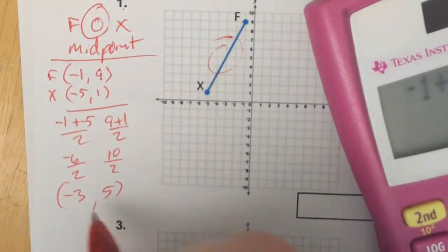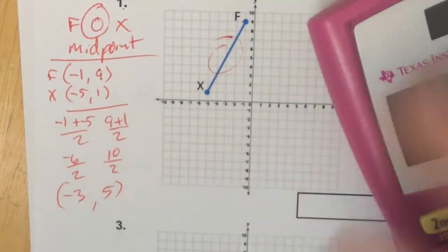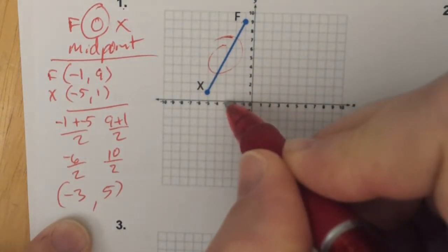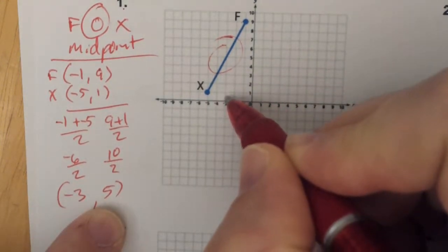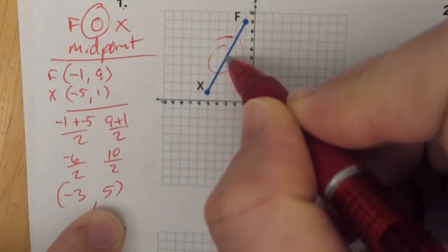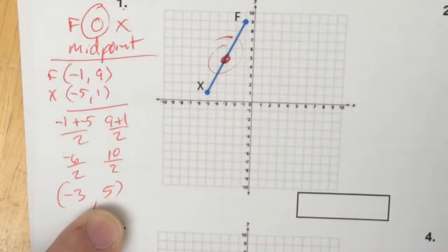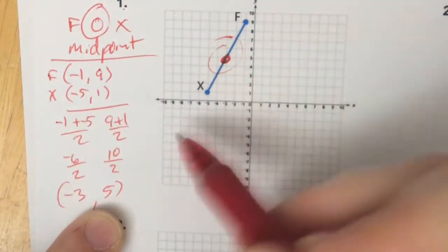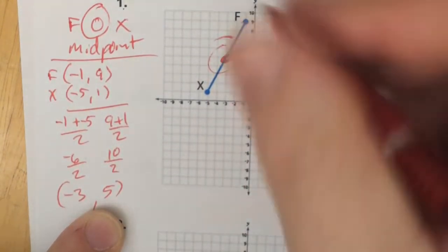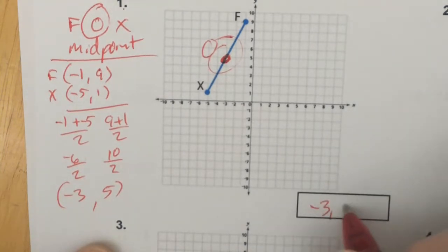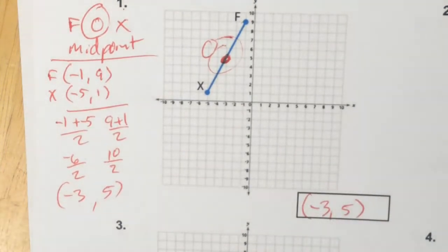And that's my answer. So negative 3, positive 5 — let's see if that works. Is that in the middle of that? Yes, that does make sense. So negative 3, 5 — put the parentheses — and that's the final answer.